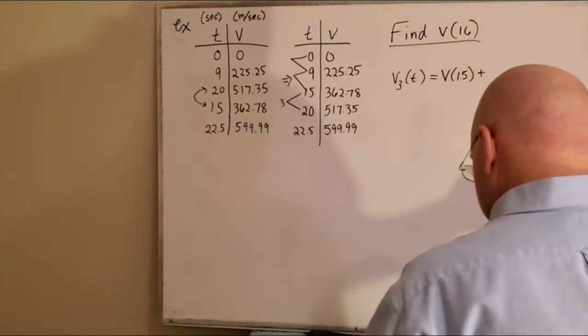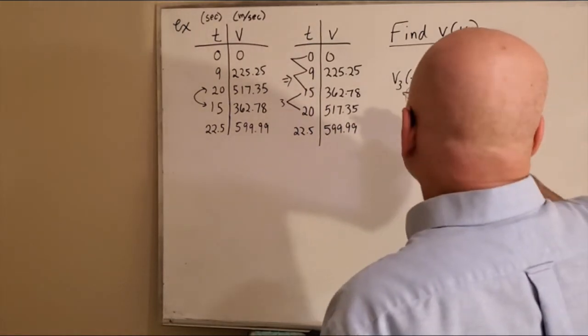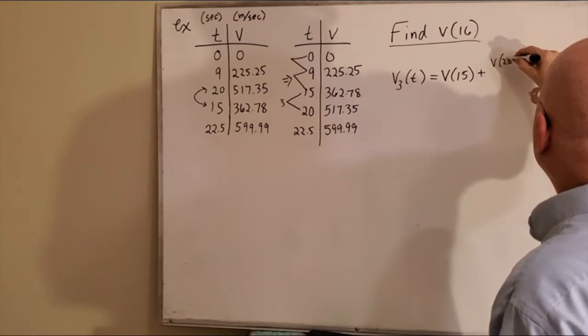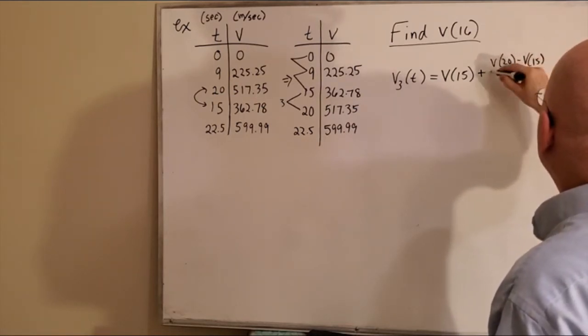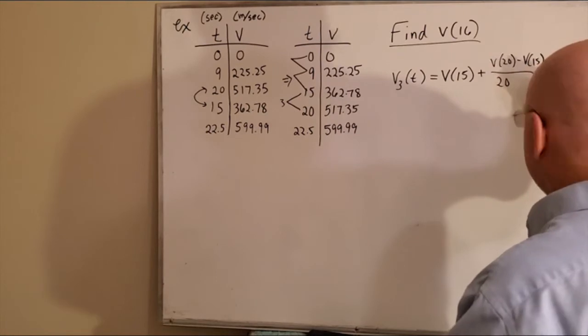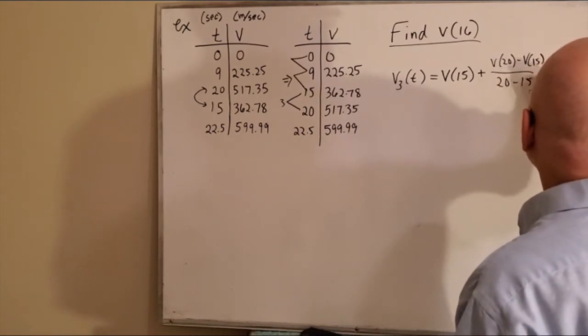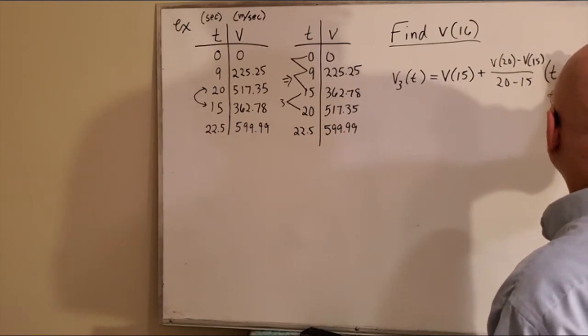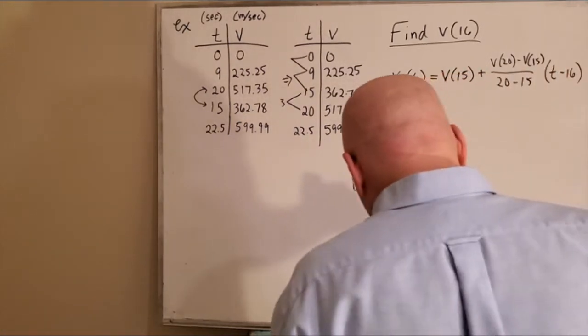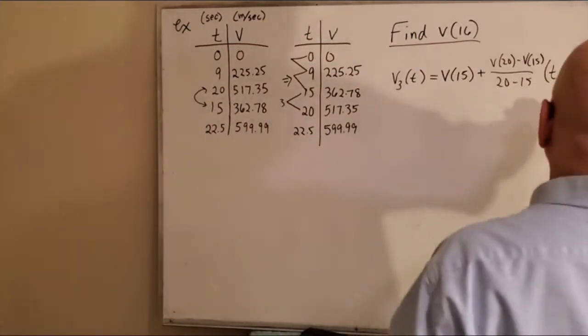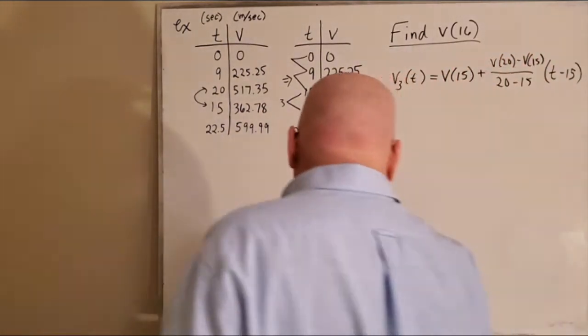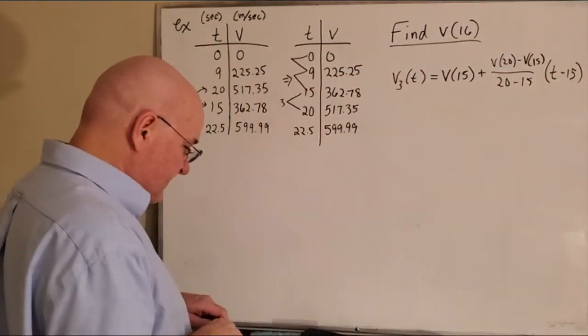Well, the slope is V20 minus V15 over 20 minus 15, times t minus 16. Sorry, 15. This is the equation of the line segment we're going to plug 16 into to figure out what it is.